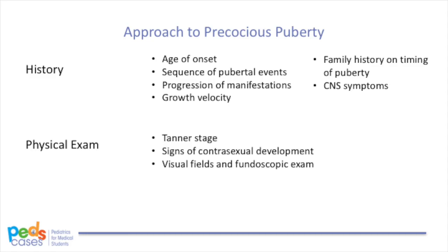On physical exam, we need to Tanner stage breasts in girls, genitals in boys, and pubic hair in both. We also need to look for any clinical signs of puberty and any signs of contrasexual development — does the girl have hirsutism or a male pattern hair distribution? Does the boy have gynecomastia? If the child shows contrasexual development, we should be considering causes of peripheral precocious puberty. To examine for CNS-related abnormalities, we can perform visual field testing and fundoscopic exam to look for signs of increased intracranial pressure.